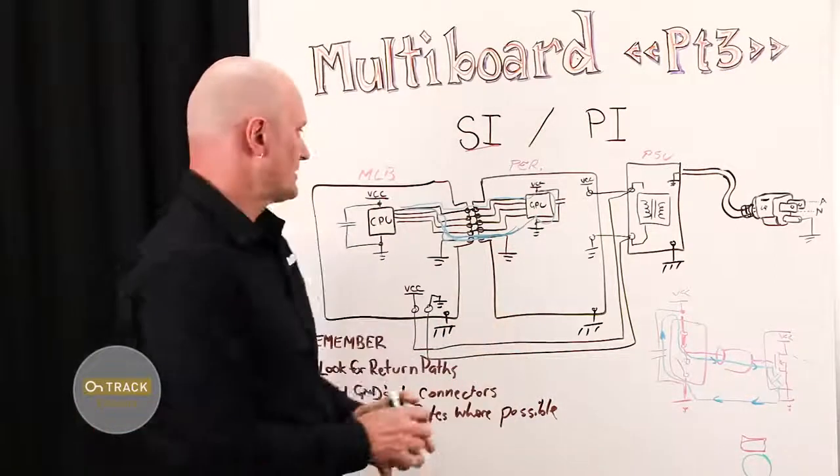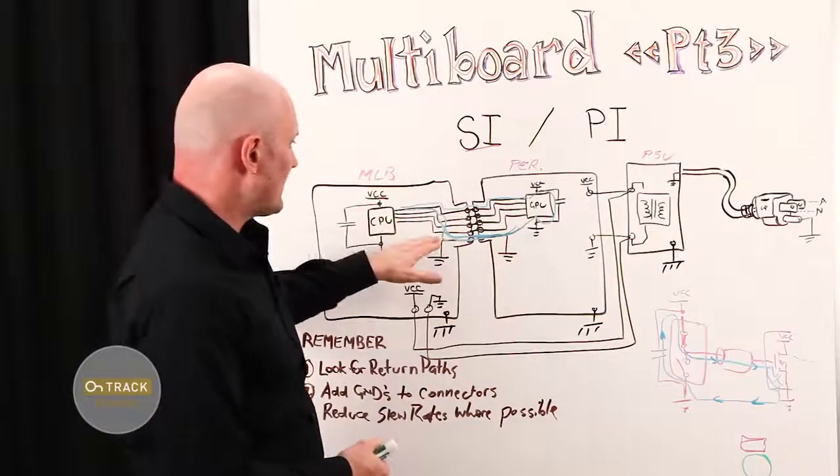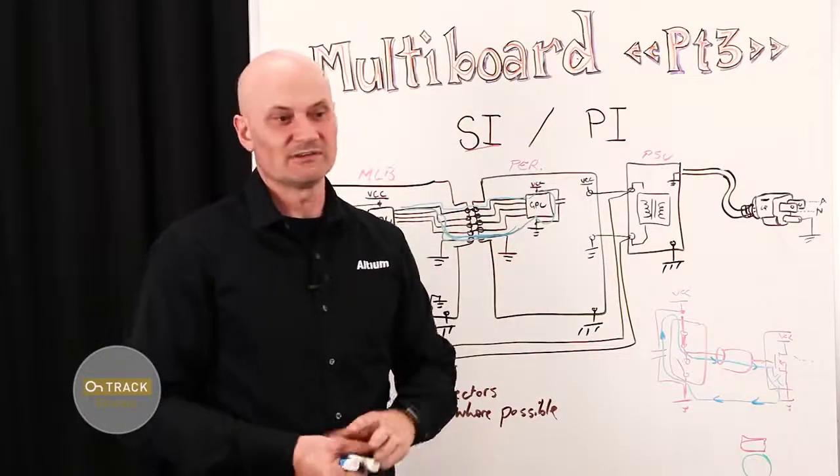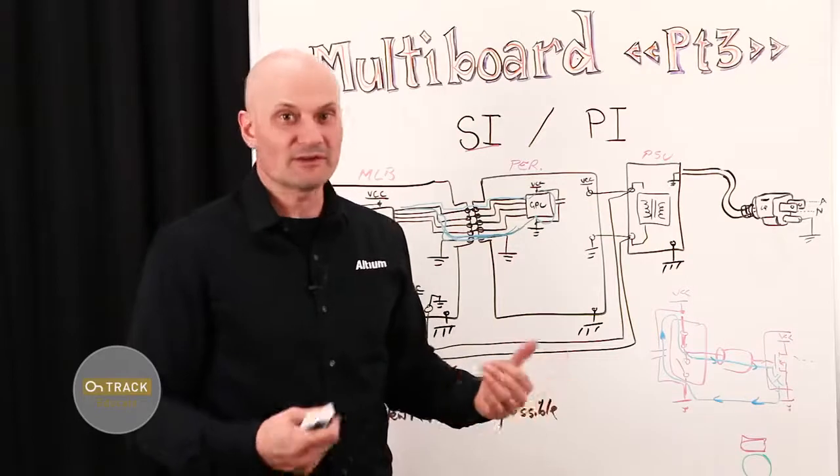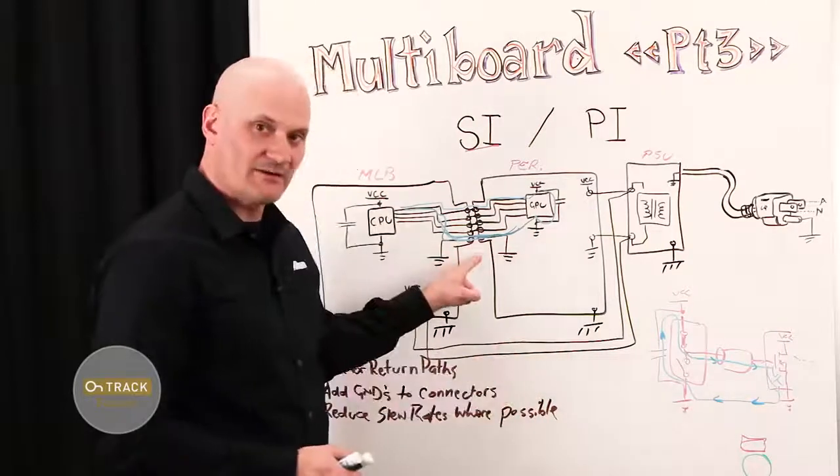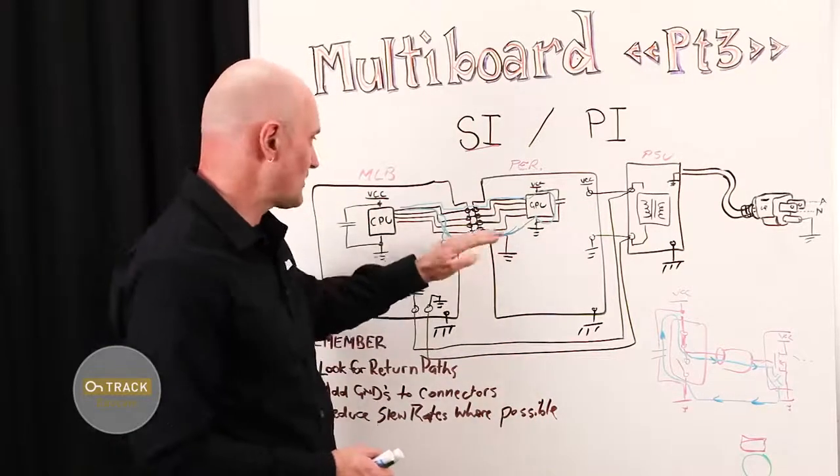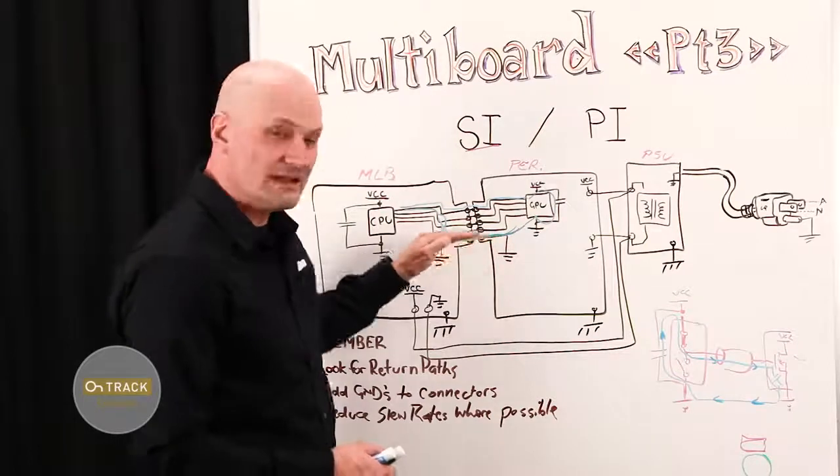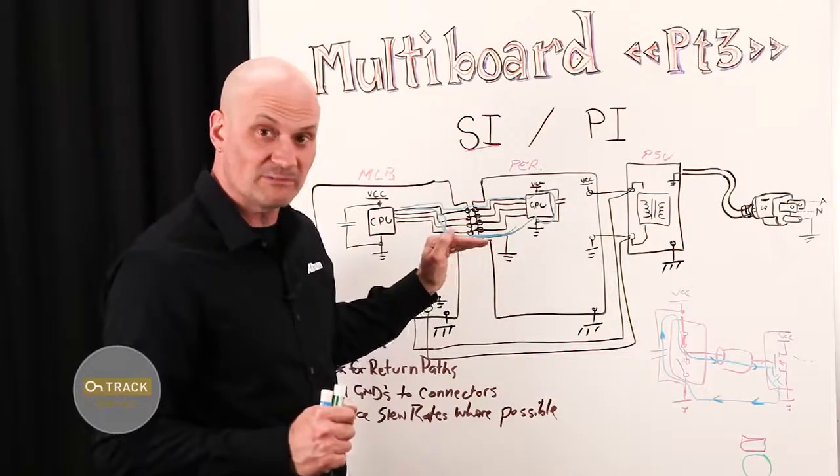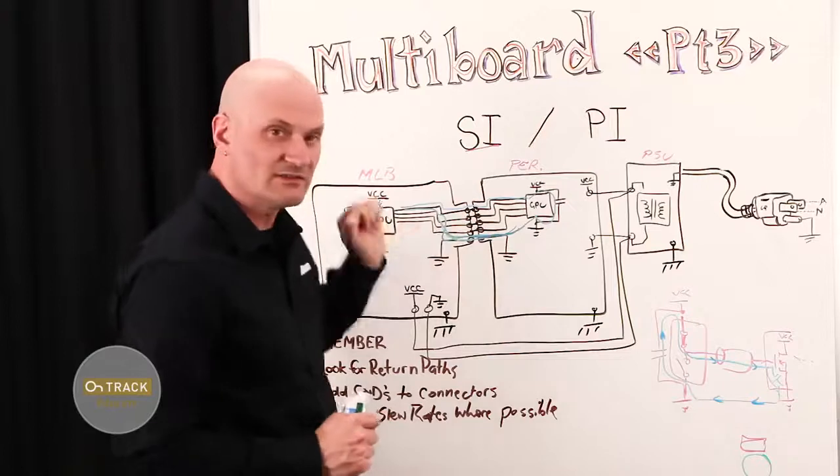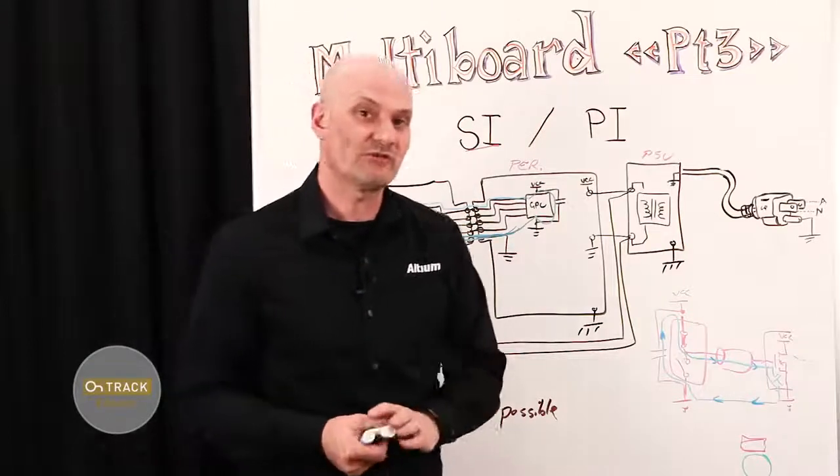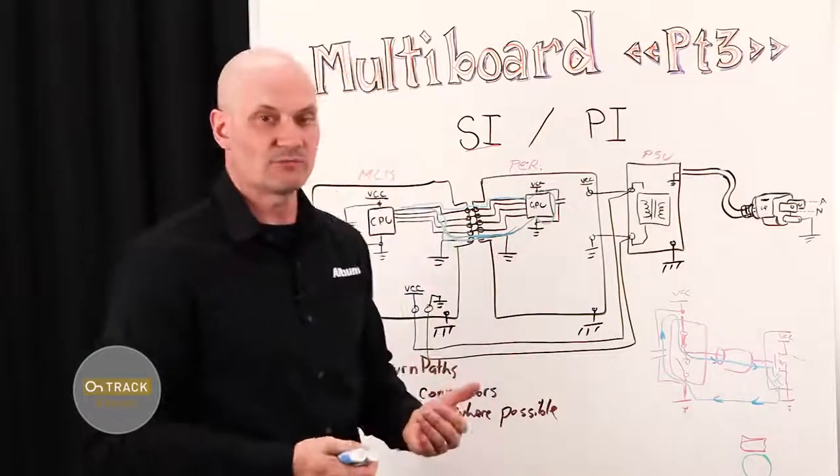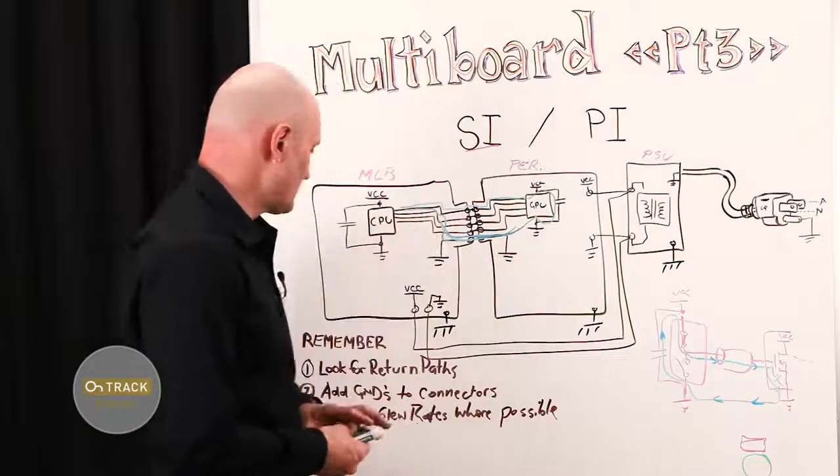But if you want to have a board-to-board connector that's capable of doing signals over 100 megahertz or so, you have to care about ground returns and add multiple ground returns. If possible, if you've got pins to spare on your connectors, do it in between each signal or signal pair if you can. And this will greatly improve the signal integrity of your board-to-board interface.